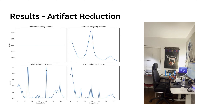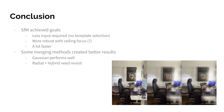Overall, the structure from motion component was hugely successful. We no longer need manual patch selection input, it's more robust as shown by the focus on the ceiling example, and it is way faster to run. Some of the merging methods were also successful — the Gaussian weighting was a huge improvement — but the radial and hybrid methods, while theoretically sound, have flawed implementations and could use revisiting. Thank you very much for your time.